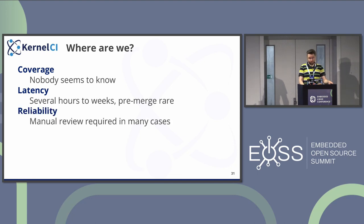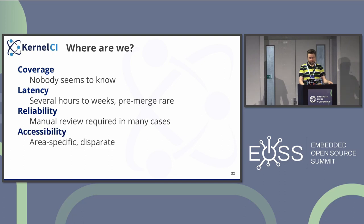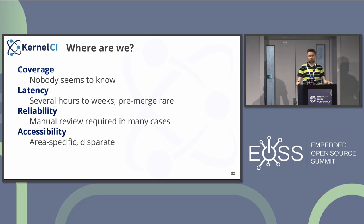Those test results are quite unreliable, and many CI system maintainers do actual manual reviews of test results before sending them to maintainers and developers because things go wrong quite often. Accessibility is quite good in places — some CI systems go a long way to make it as accessible as possible, and kernel maintainers are quite demanding of that. But all those results are done in different ways, so that makes it a little more difficult.